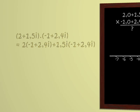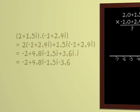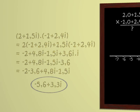Therefore, we get minus 2 plus 4.8i minus 1.5i plus 3.6i times i. But i squared is minus 1, since we invented i for this purpose. So we get minus 2 plus 4.8i minus 1.5i minus 3.6. And tidying up, that gives us minus 2 minus 3.6 plus 4.8i minus 2.5i, giving us in all minus 5.6 plus 3.3i.